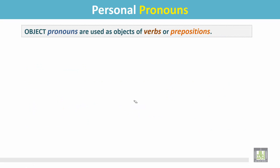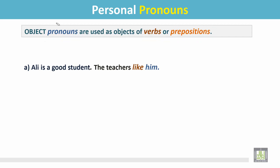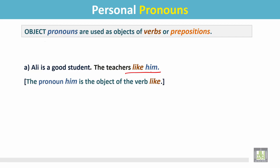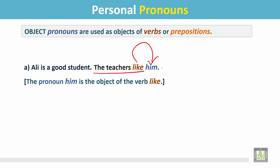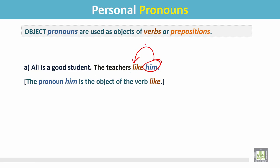Object pronouns are used as objects of verbs or prepositions. Example A: 'Ali is a good student. The teachers like him.' In this sentence, the pronoun 'him' is the object of the verb 'like.' If we ask the question 'The teachers like whom?', we find the answer: 'him.' Him is the object of the verb 'like.'